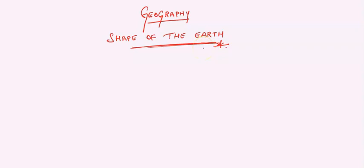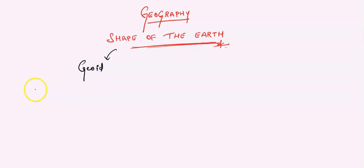Now, can you tell me one thing — how many shapes does the earth have, or in which ways can we define the shape of the earth? Most of them will say the earth has a geoid shape. As soon as they hear the word 'shape,' most people come up with the answer 'geoid.' Can you tell me some other shapes of the earth?